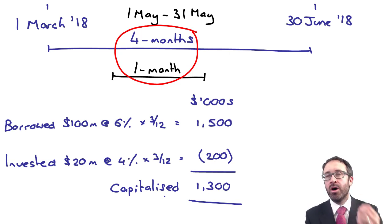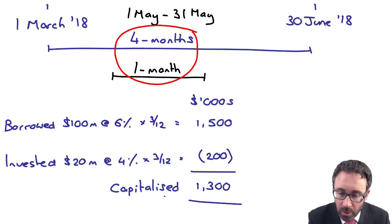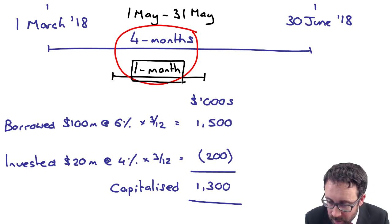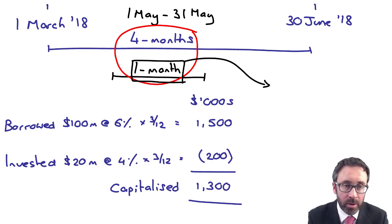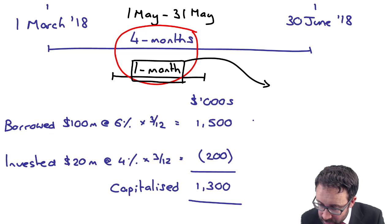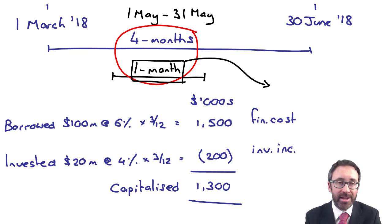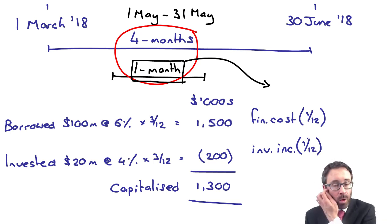That 1.3 million will form part of PPE — it's not taken to profit or loss. Do note, however, that if this were a bigger question, what do we do with those amounts for the one month of strike action? You would have a finance cost and you would have investment income, both calculated based on one twelfth.